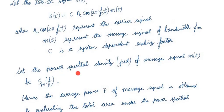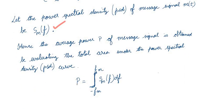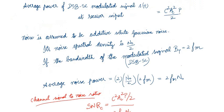Now we consider the power spectral density of the message signal, given by Sm(f). Power spectral density describes the power of the signal at each frequency. If you know the power spectral density, you can compute the average power P by integrating it — the total area under the power spectral density gives the average power P.